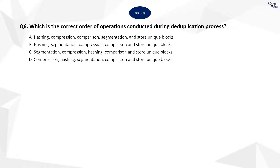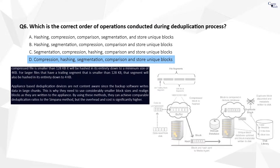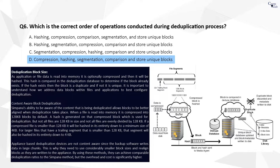Question 6. The correct answer is D. When a file is read into memory, it is compressed into 128 KB blocks by default. A hash is generated on that compressed block, which is used for deduplication. But not all files are 128 KB in size, and not all files are evenly divided by 128 KB. If the compressed file is smaller than 128 KB, it will be hashed in its entirety, down to a minimum size of 4 KB. For larger files that have a trailing segment smaller than 128 KB, that segment will also be hashed in its entirety, down to 4 KB.